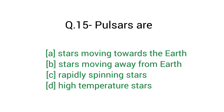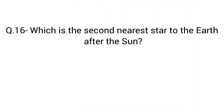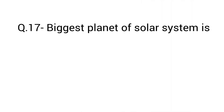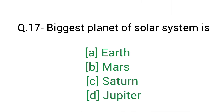Question number 15: Pulsars are? Right answer C — rapidly spinning stars. Question number 16: Which is the second nearest star to the Earth after the sun? Right answer D — Alpha Centauri. Question number 17: The largest planet in our solar system is? Right answer D — Jupiter.